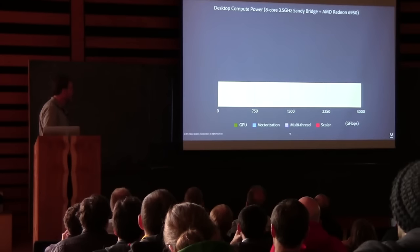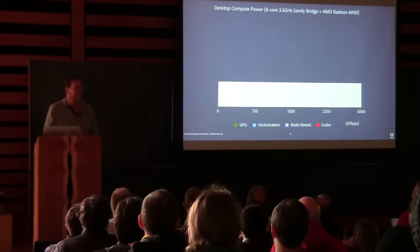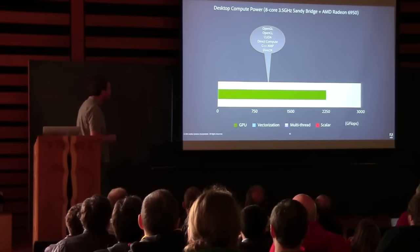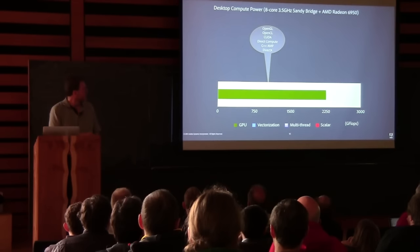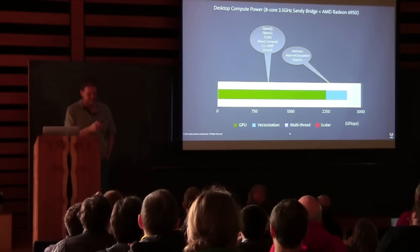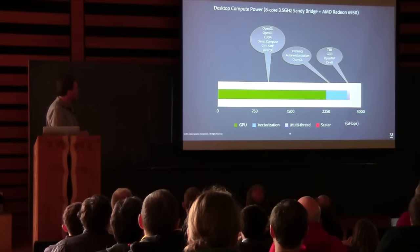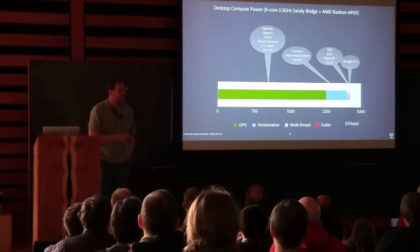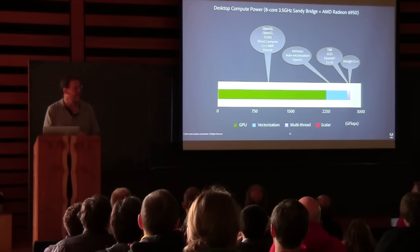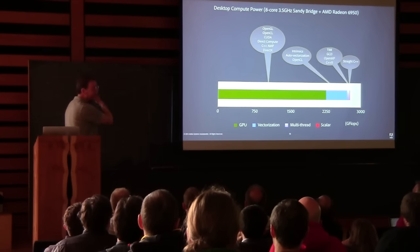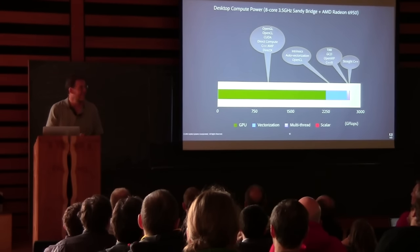Performance through parallelism: a lot of people don't know where the performance is in their machine. That's roughly how much performance you have in your desktop GPU. That's the performance from the SIMD unit — and we have no direct SIMD support yet in C++. That's how much you get lighting up multiple cores. And that little sliver is just straight-line single-thread CPU, no SIMD. If you're not thinking about concurrency, you're literally leaving 99% of the performance of your machine on the floor.